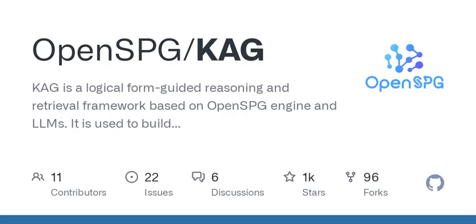Let's take a moment to highlight just how pivotal this framework can be in ensuring data is used responsibly. Ensuring accuracy and mitigating bias in the information retrieved is crucial. In summary, CAG is not just a technical achievement — it's a tool that can empower professionals by enhancing how they gather and utilize knowledge.